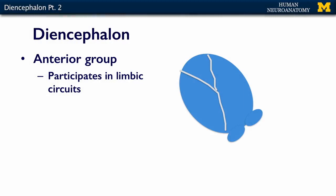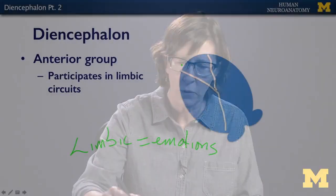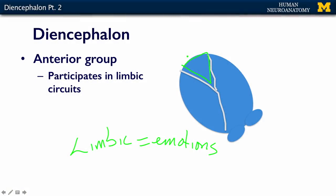The dorsal thalamus also contributes to the limbic system. We'll talk a lot more about it when we discuss the amygdala, but for now, the limbic system equals your emotions — your emotional response to your environment and how your internal emotions then affect your behaviors. This anterior group is connected to your cingulate gyrus,